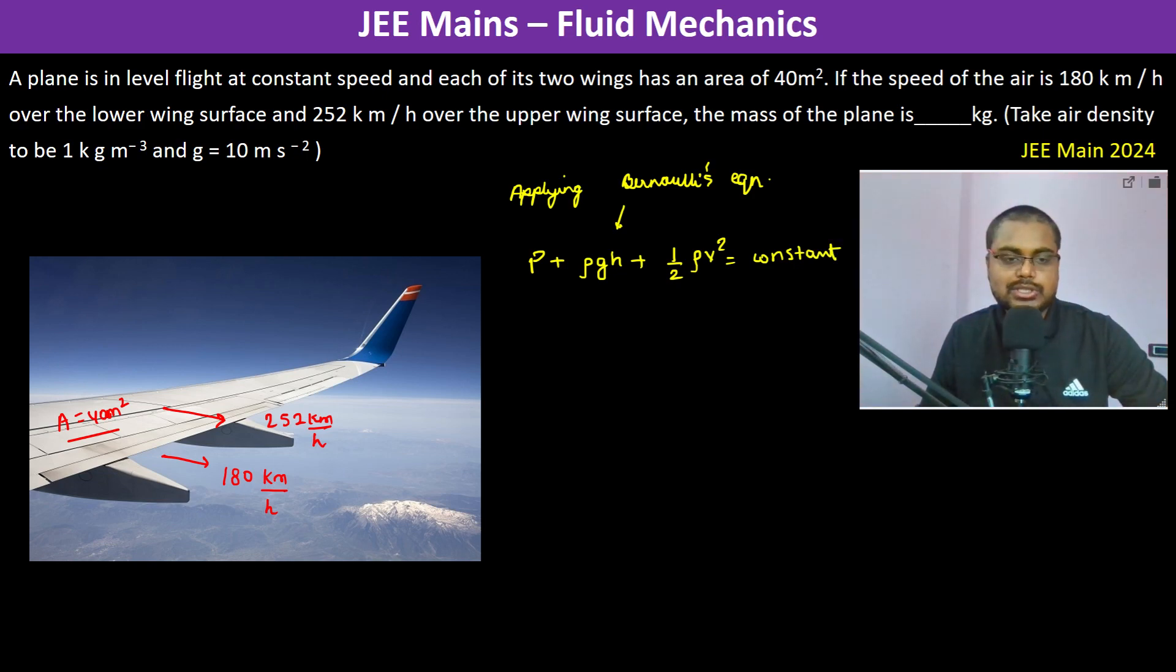Now we shall apply this for both the upper part and the lower part. So we can write P upper plus rho GH. Now because the thickness of the wing is less, we will neglect it. So rho GH is neglected due to less thickness of wings.